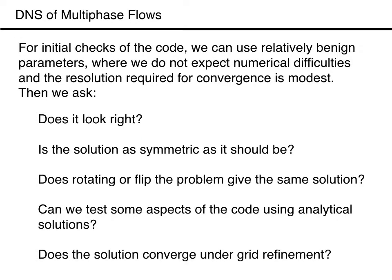If we do everything correctly, we expect the numerical solution to be an approximation to an exact solution of the governing equations. However, we do not know how accurate our solution is, or if it is correct. Assuming that our code runs, there are two main reasons that the answer may not be correct: the first is programming errors, and the second is numerical errors. Our goal is to eliminate the first and understand the second.